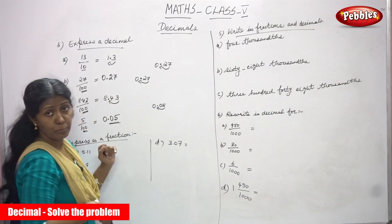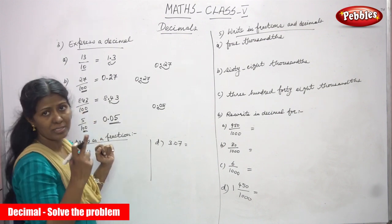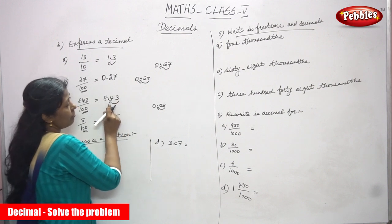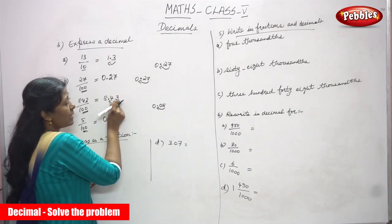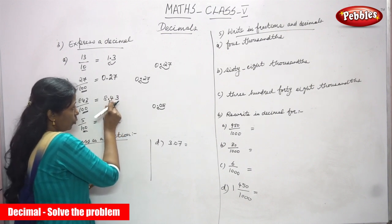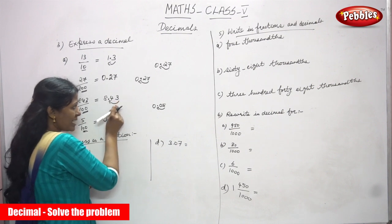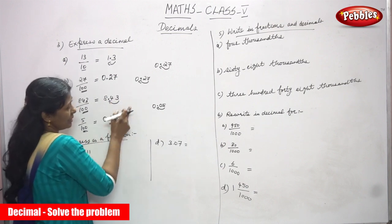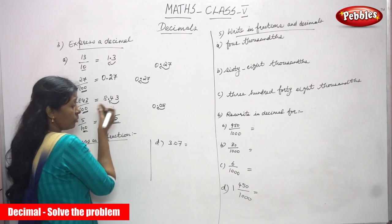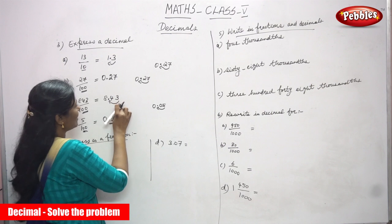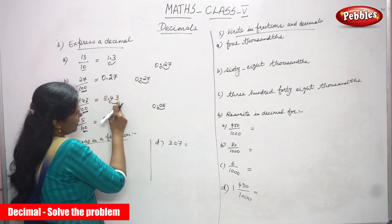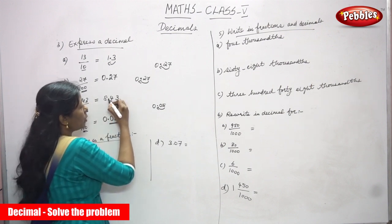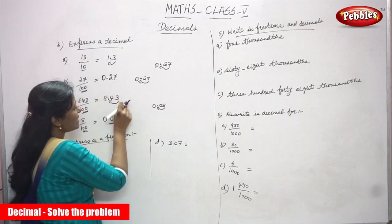For 843 by 100, it is an improper fraction, but you still move only 2 digits from right to left. From 843, the last 2 digits are 3 and 4. After those 2 digits you put a point, then write 8. The answer is 8.43.